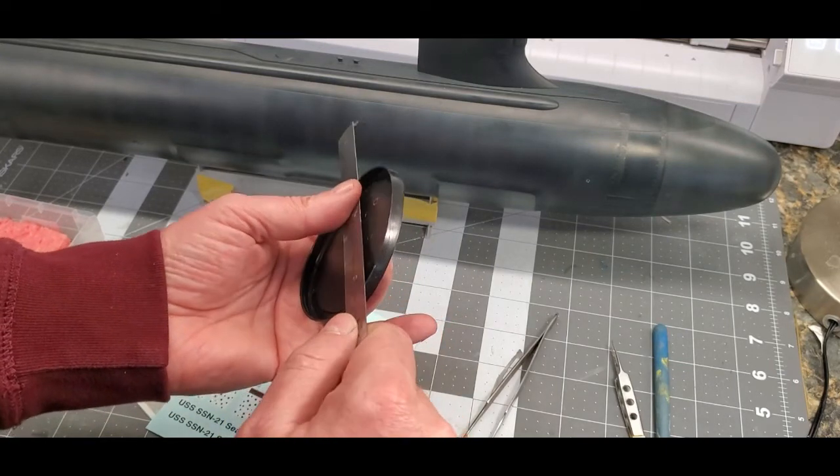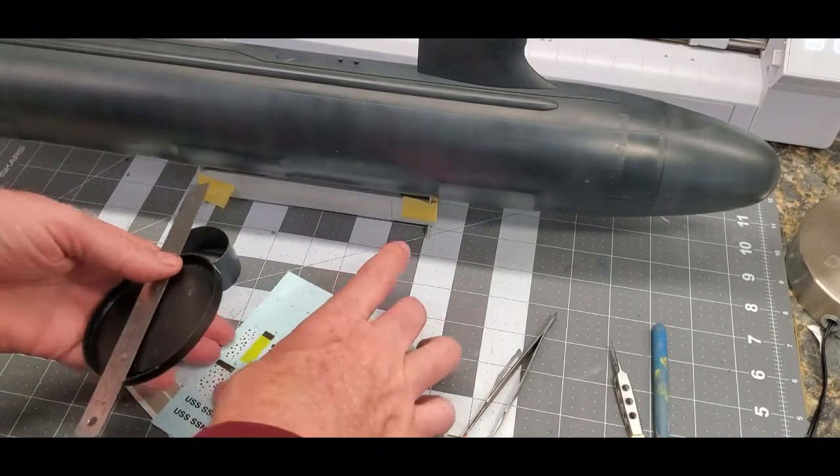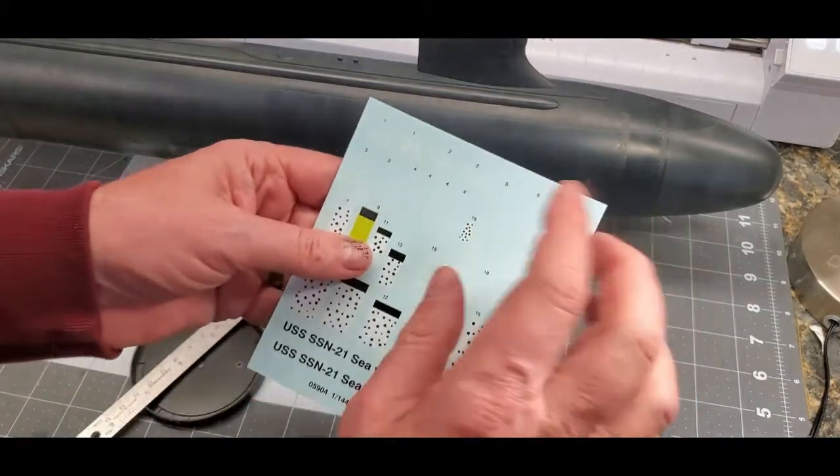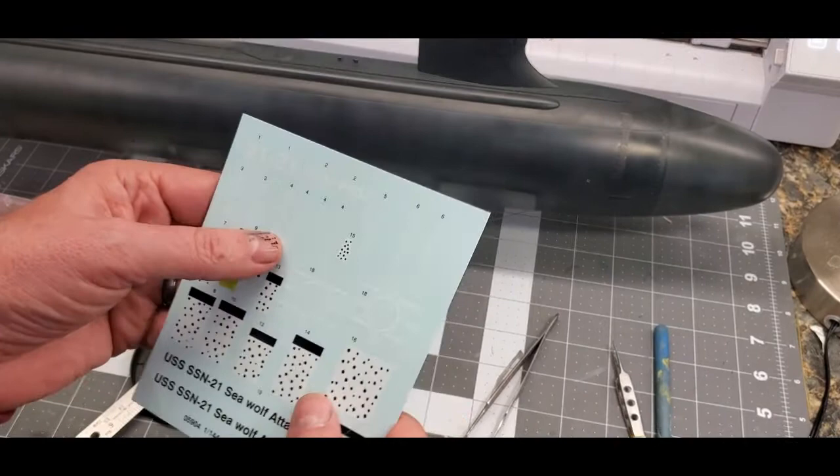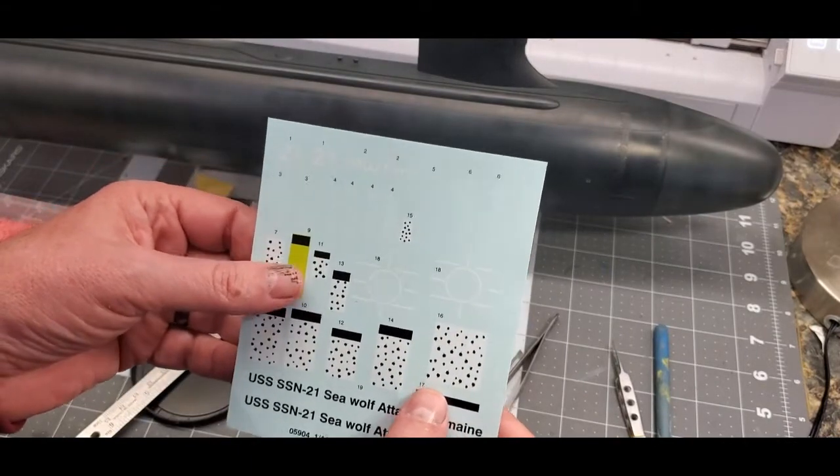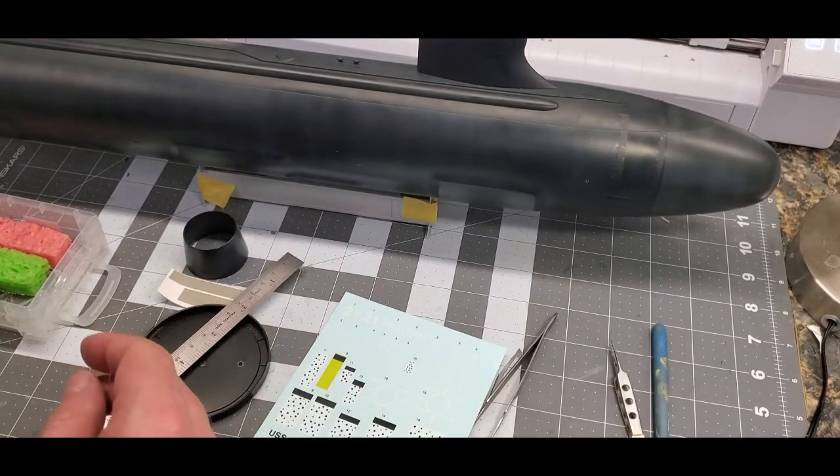That shows up in the decals. As you can see, Trumpeter, and probably everybody else, just spaced them equally. I guess you can't tell, but I can tell. So I decided to fix that.